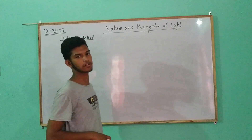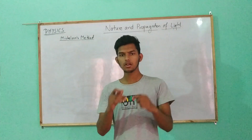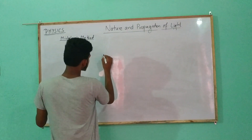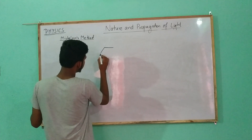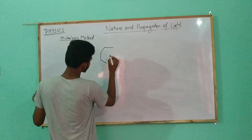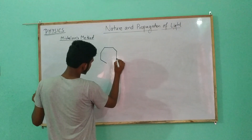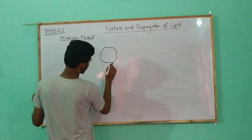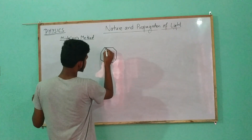It is an octagonal mirror. This is a straight side. One side, two side, three side, four side, five side, six side, seven side, eight side. This mirror has all its surfaces on the inside.